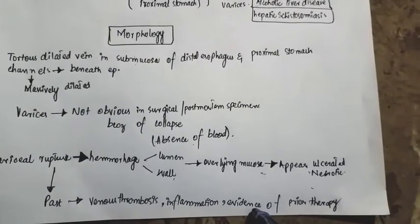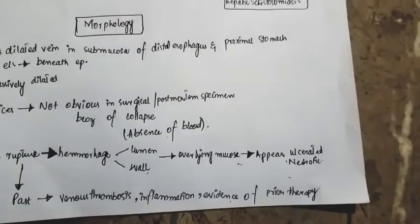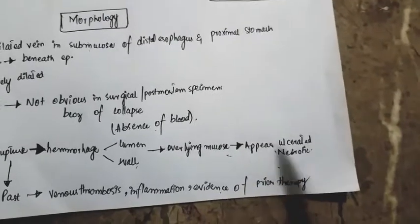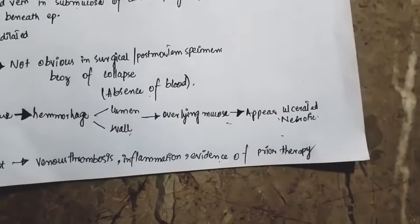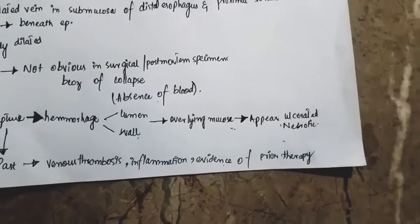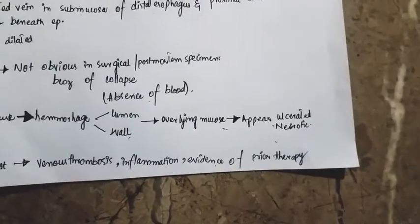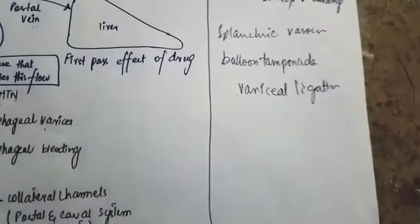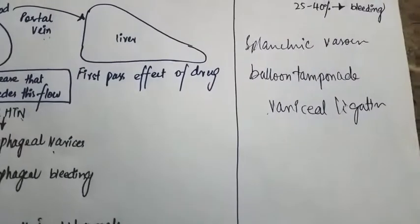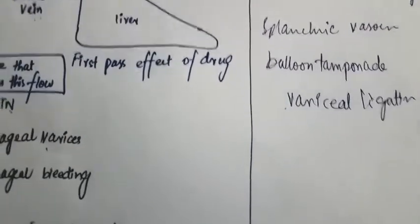Clinically, these are present in 50% of cirrhotic patients, but these varices are going to bleed in 25 to 40% of cases.